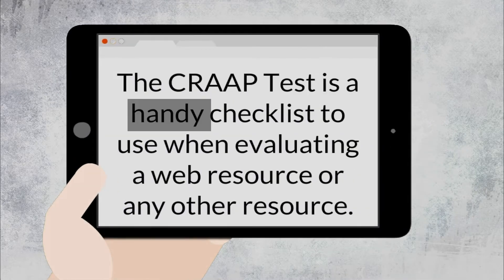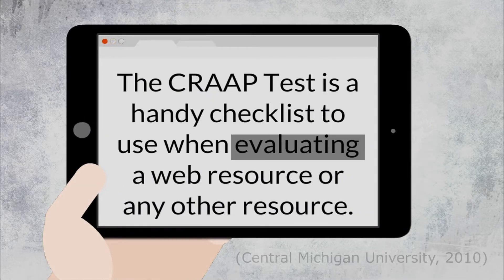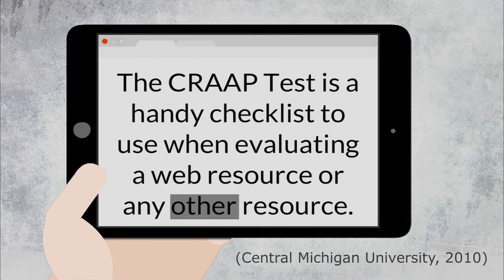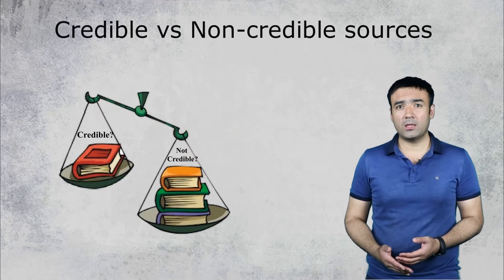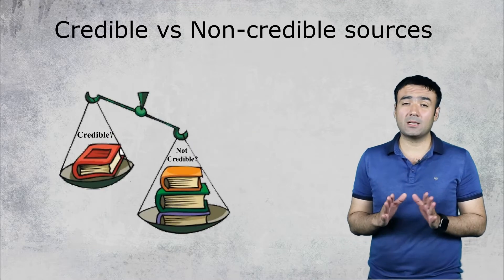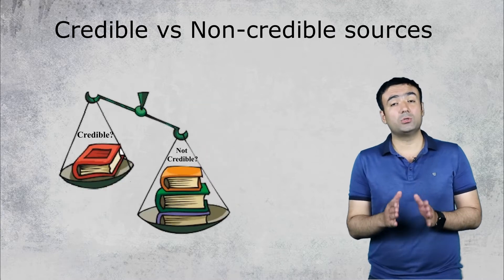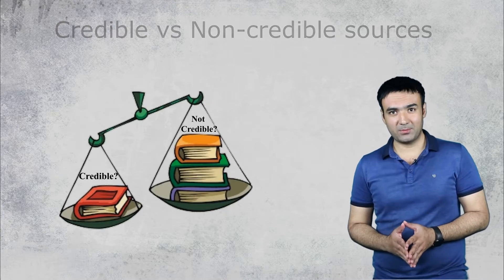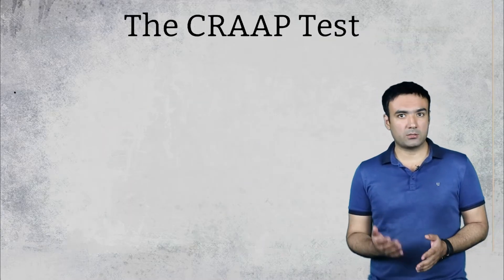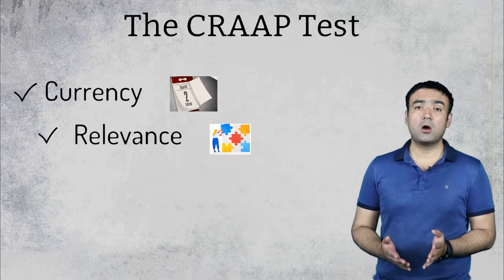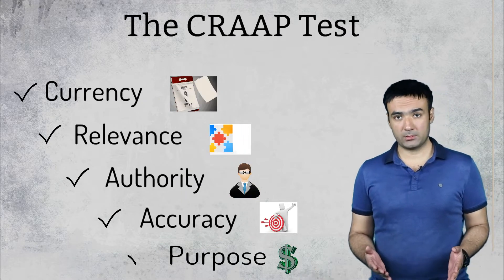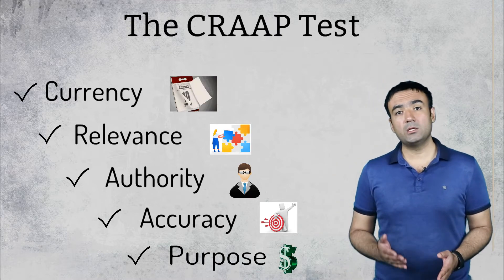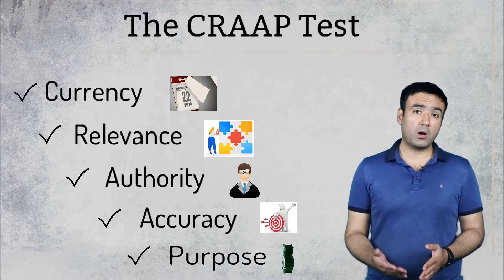The CROP test is a handy checklist to use when evaluating a web resource or any other resource. The test provides a list of questions to ask yourself when deciding whether or not a source is reliable and credible enough to use in your academic research paper. CROP stands for currency, relevance, authority, accuracy, and purpose. So let's look into each criterion one by one.